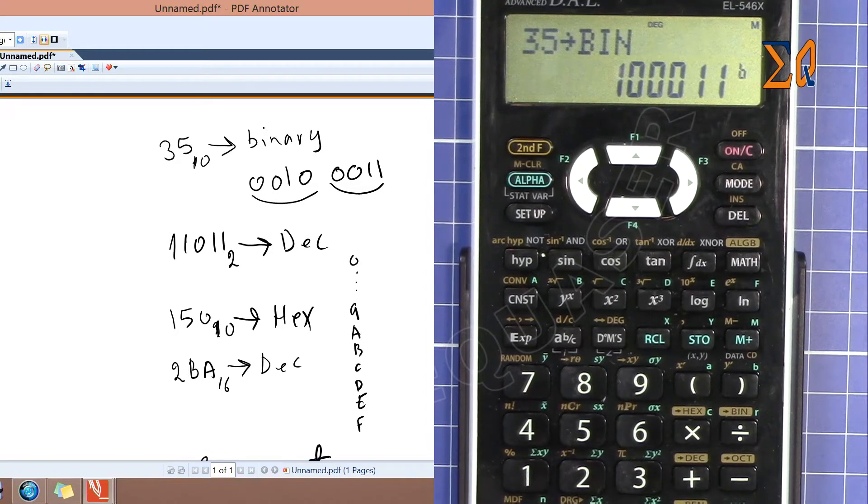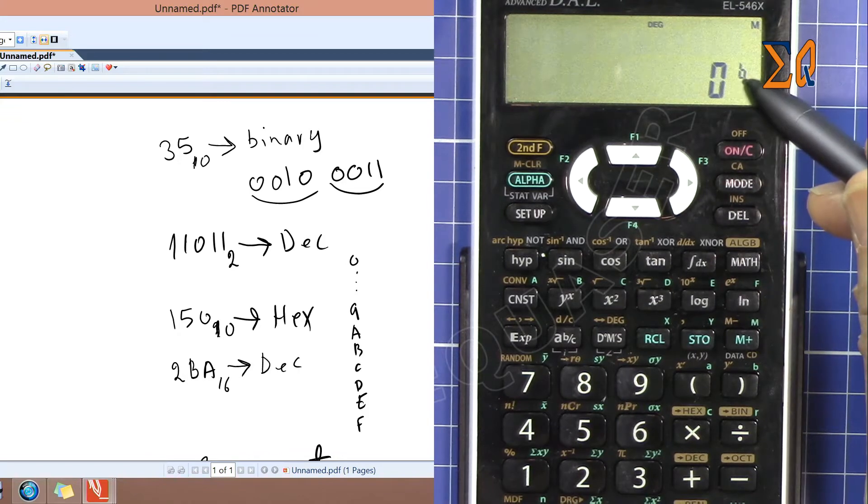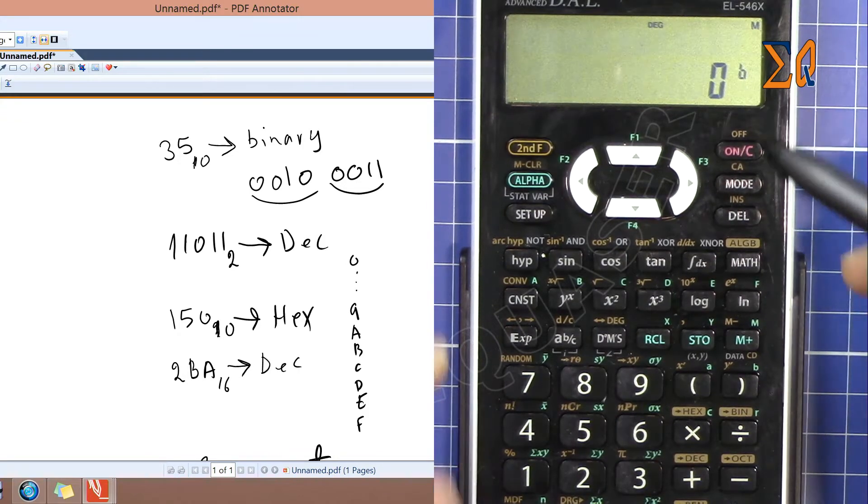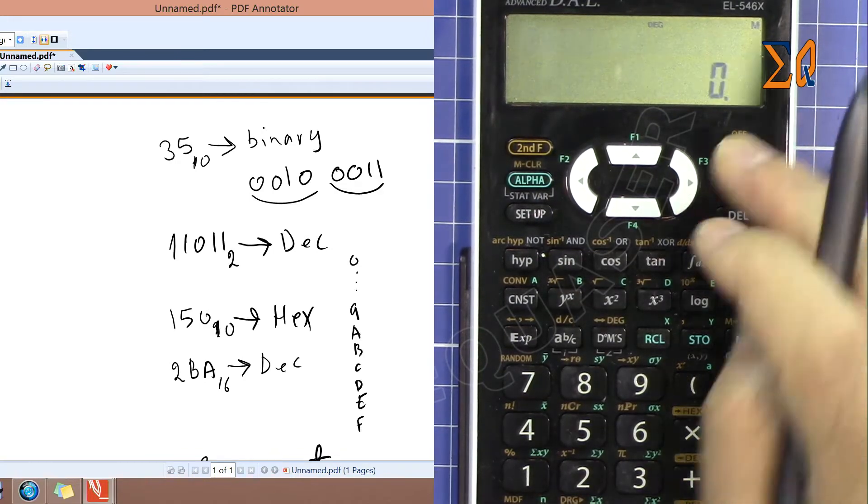All clear. Now I press clear. The calculator is in binary. If you want to go back to decimal, press shift to the second function and then plus sign which is decimal.